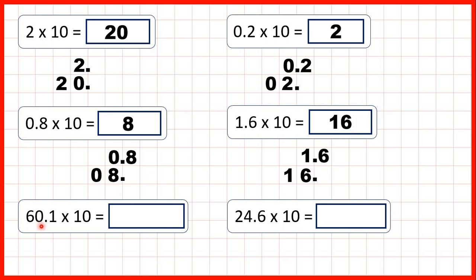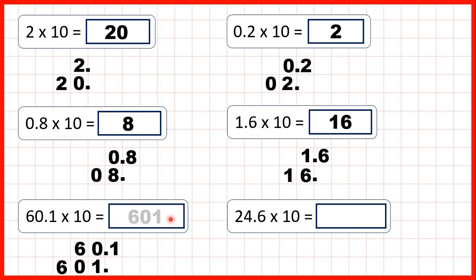For 60.1 times 10, we can write out the number, copy down the decimal point, and again we're multiplying, so digits are moving to the left. There's one 0 in the number 10, so the digits need to be copied down 1 square to the left. When we do that, we get the decimal point at the end, so we have a whole number as our answer — that's 601.